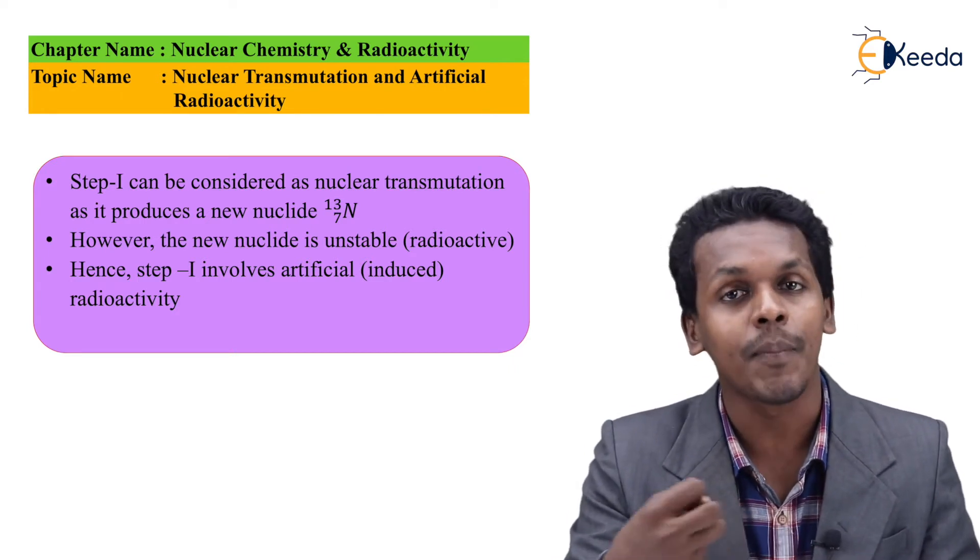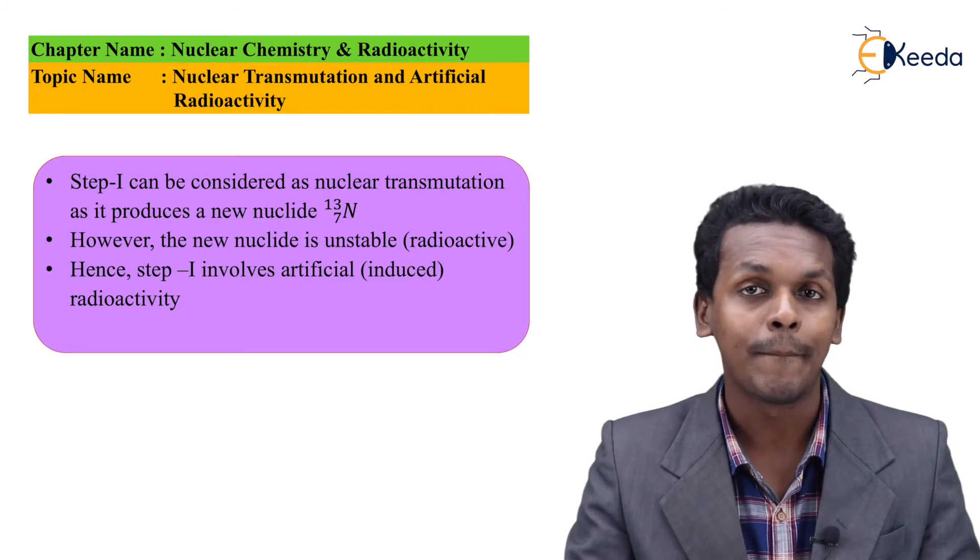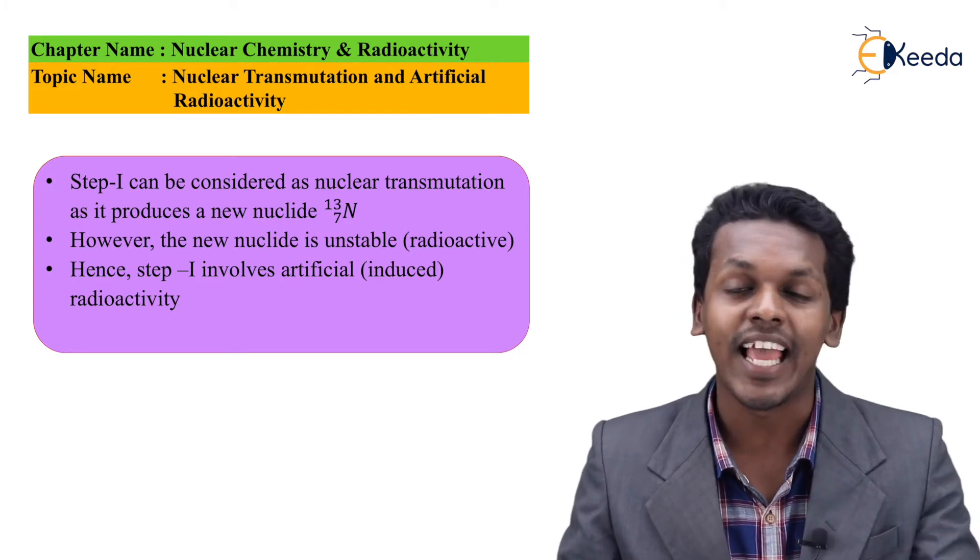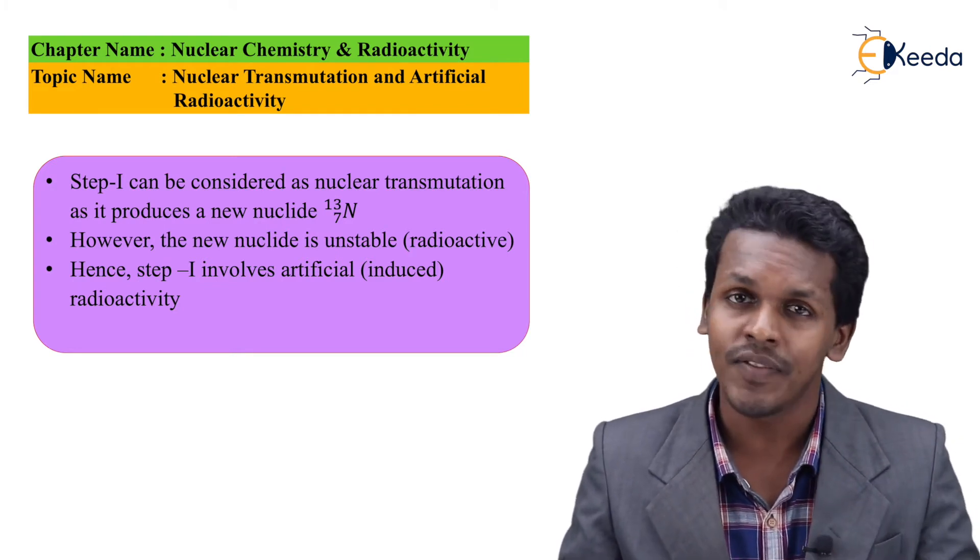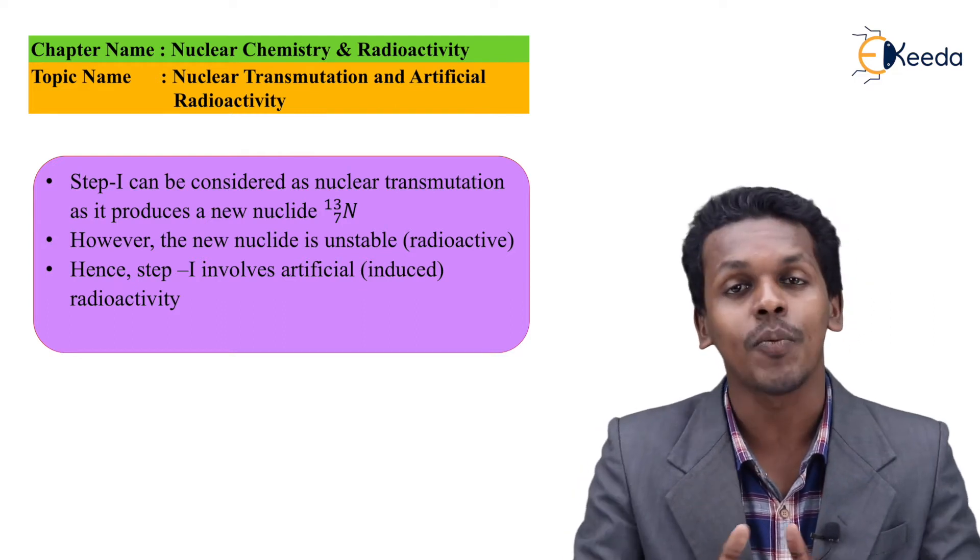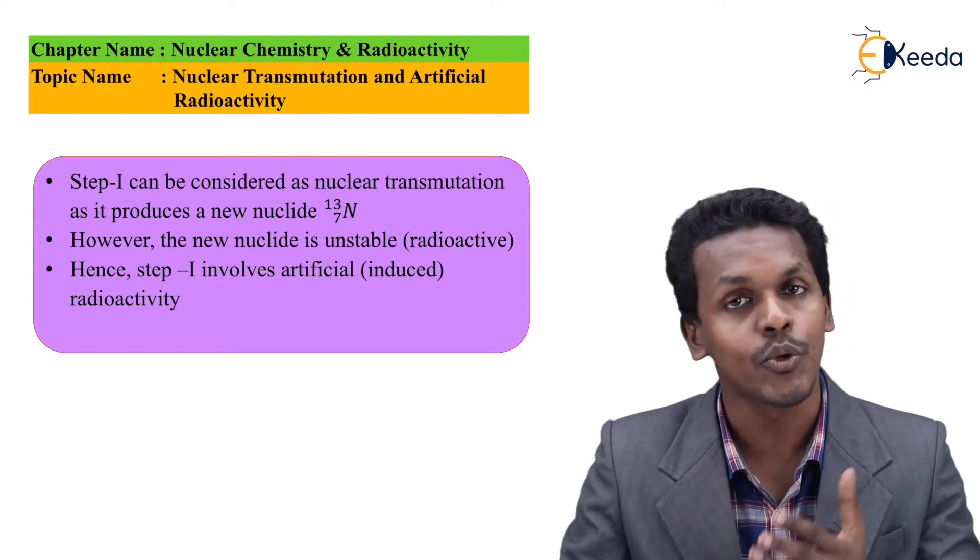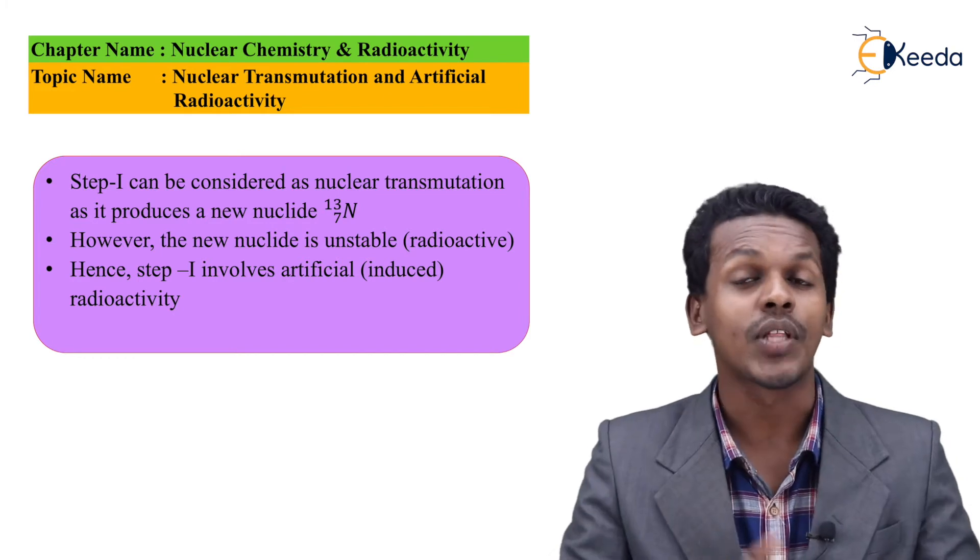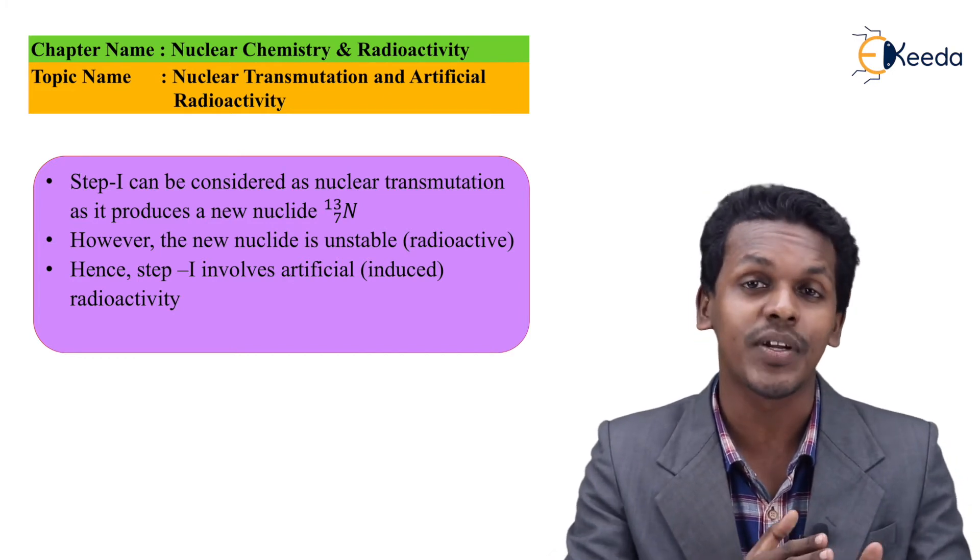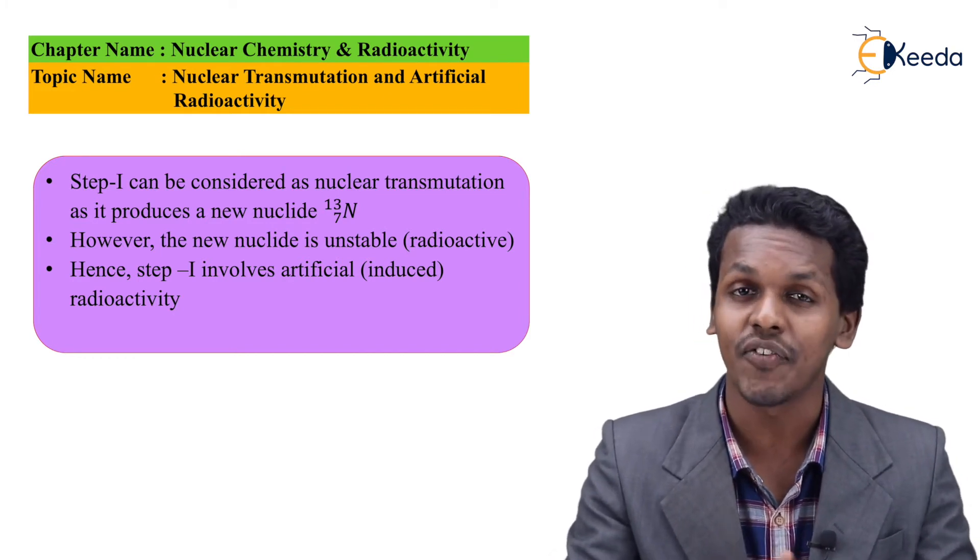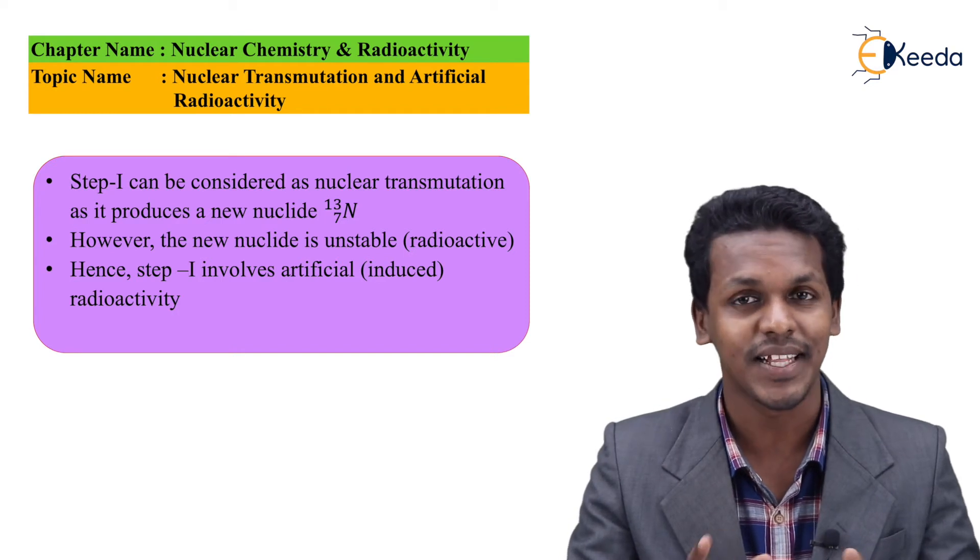A particle has been released - the positron. These are the two terms: nuclear transmutation and artificial radioactivity.